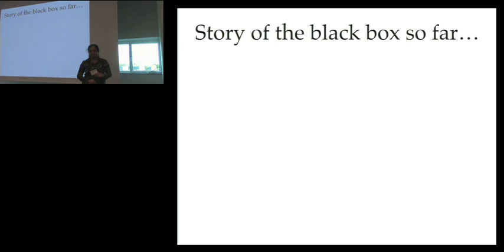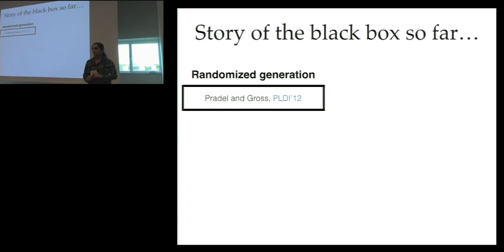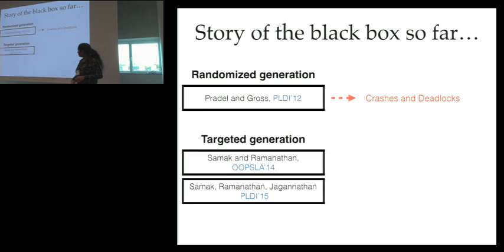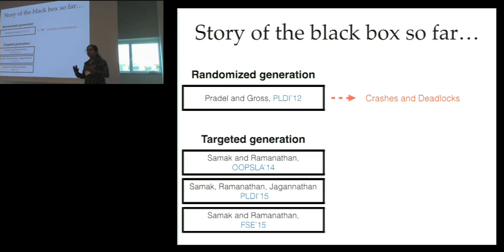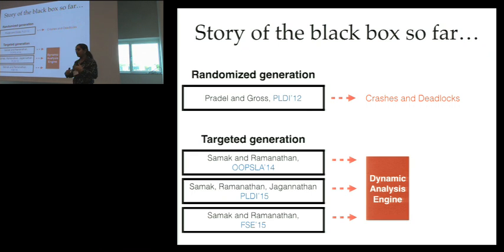There has been some work in this area and most notably, it was Pradel and Gross, who is the session chair here, who proposed a randomized technique to generate such clients in an automated manner. What they were looking for is crashes and deadlocks hidden in the library. In addition, we in the recent years even we have worked in this area and we have come up with targeted client synthesis techniques which when synthesized will then be input to a dynamic analysis engine. This engine itself can be anything. It could be fast track, race fuzzer, deadlock fuzzer, any dynamic defect detection engine that we have, concurrent defect detection engine. And from these, we would be able to get developed data races and atomicity violations that were hidden in the library.